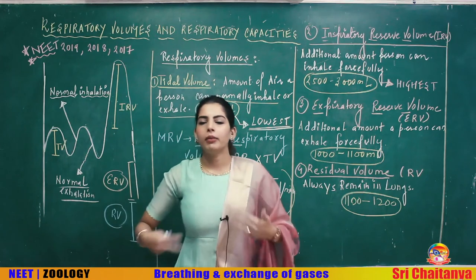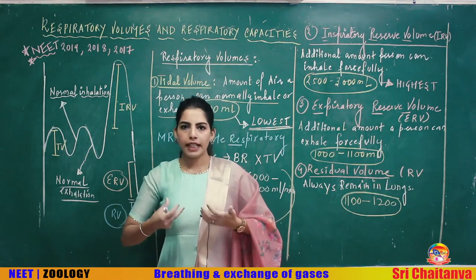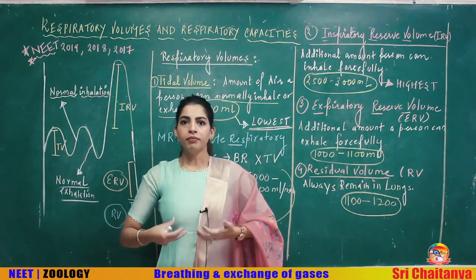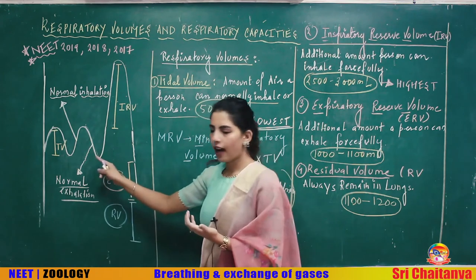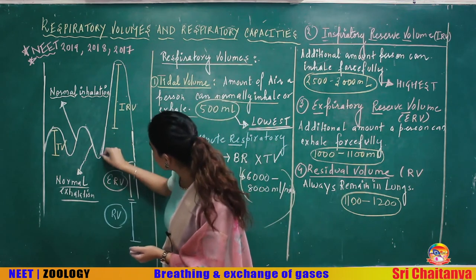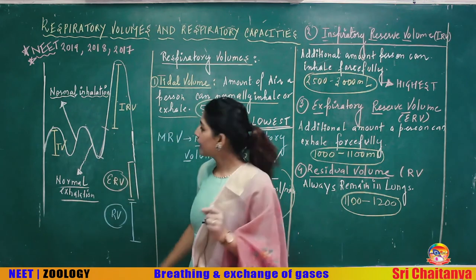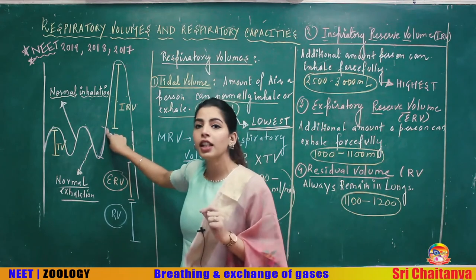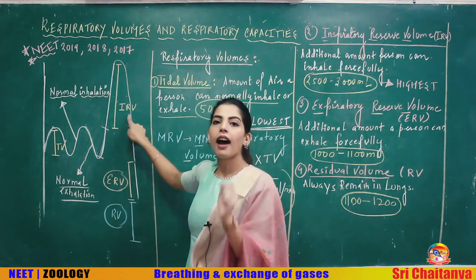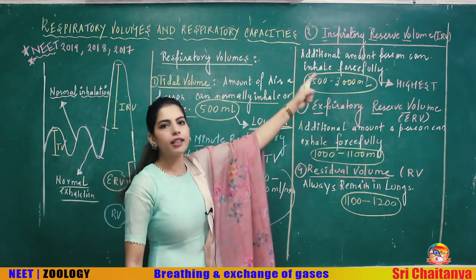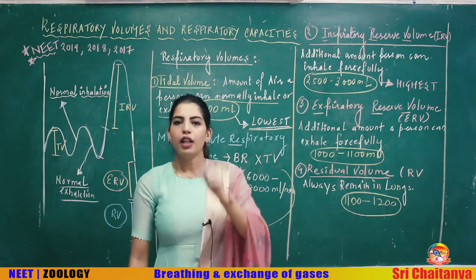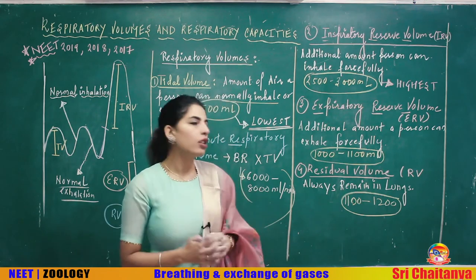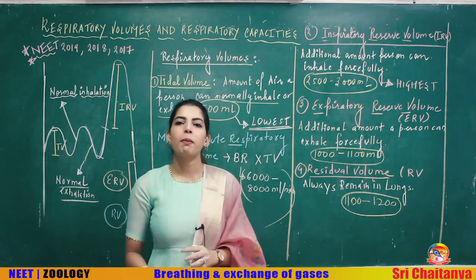The next volume is Inspiratory Reserve Volume (IRV) — the additional amount of air you can forcefully inhale after a normal inhalation. On the graph, this is the extra volume above normal inhalation that you can take in forcefully. Its value is 2500–3000 ml, which is the highest among all respiratory volumes.